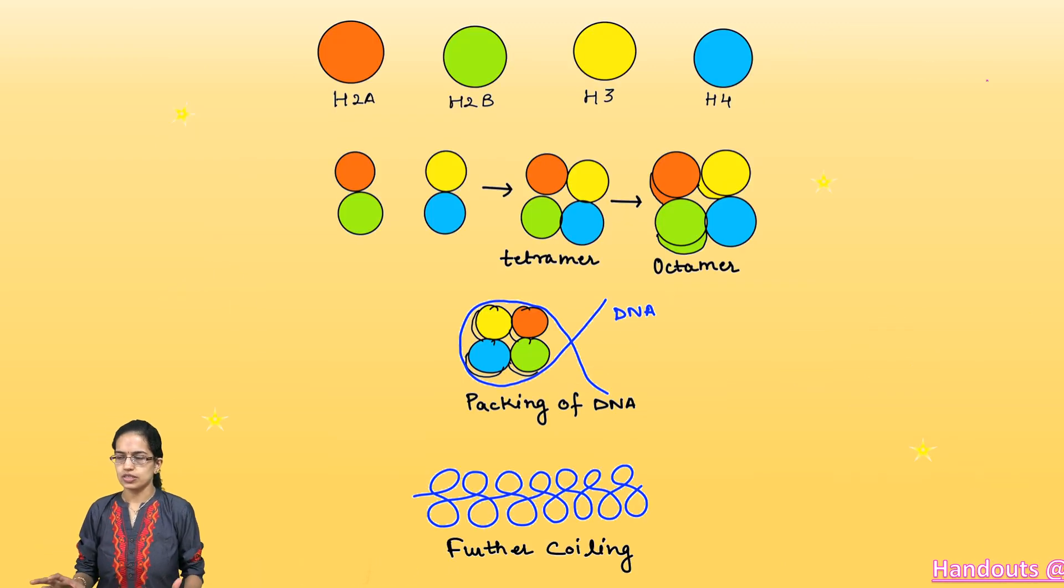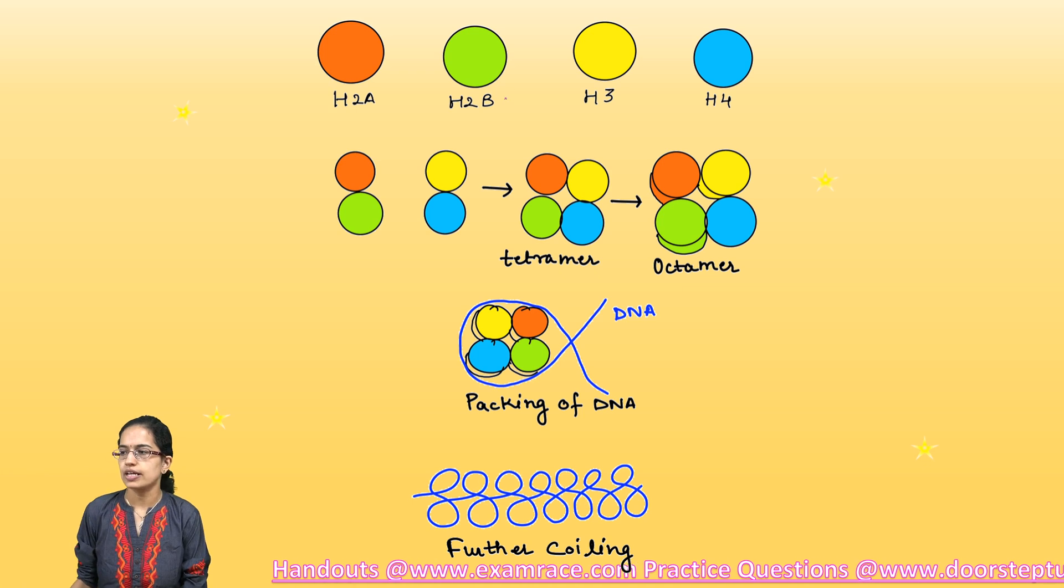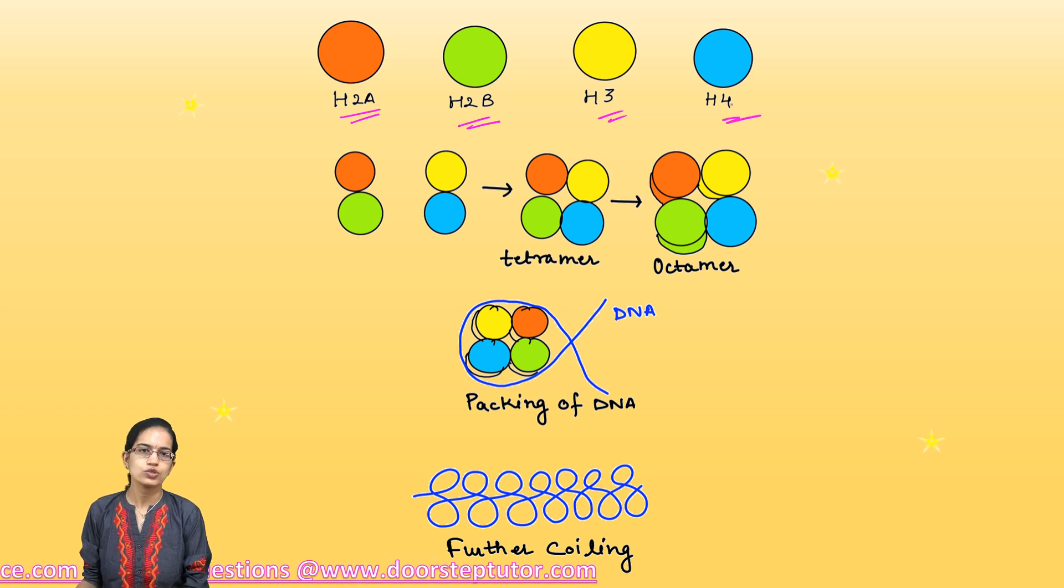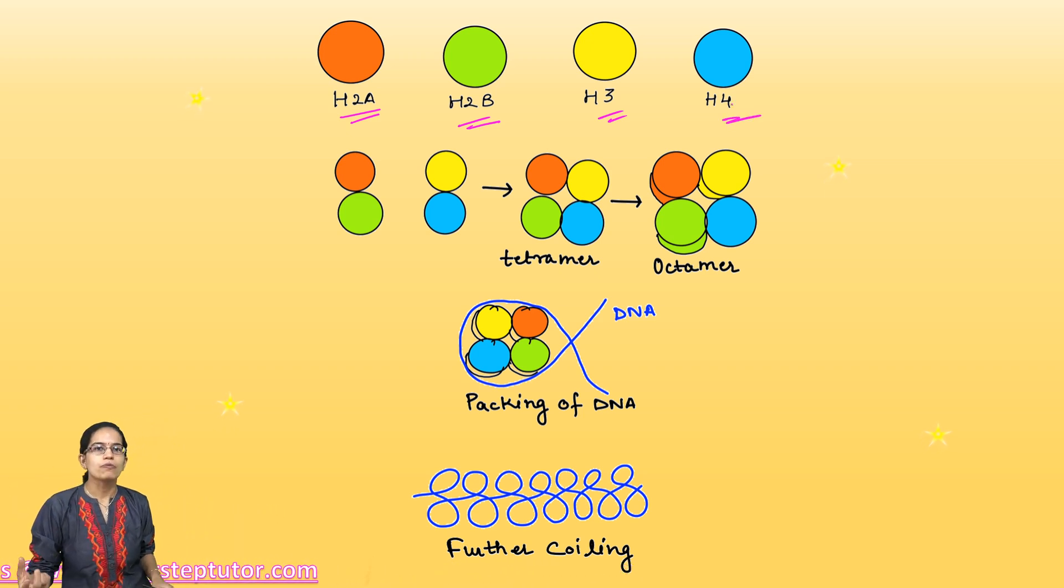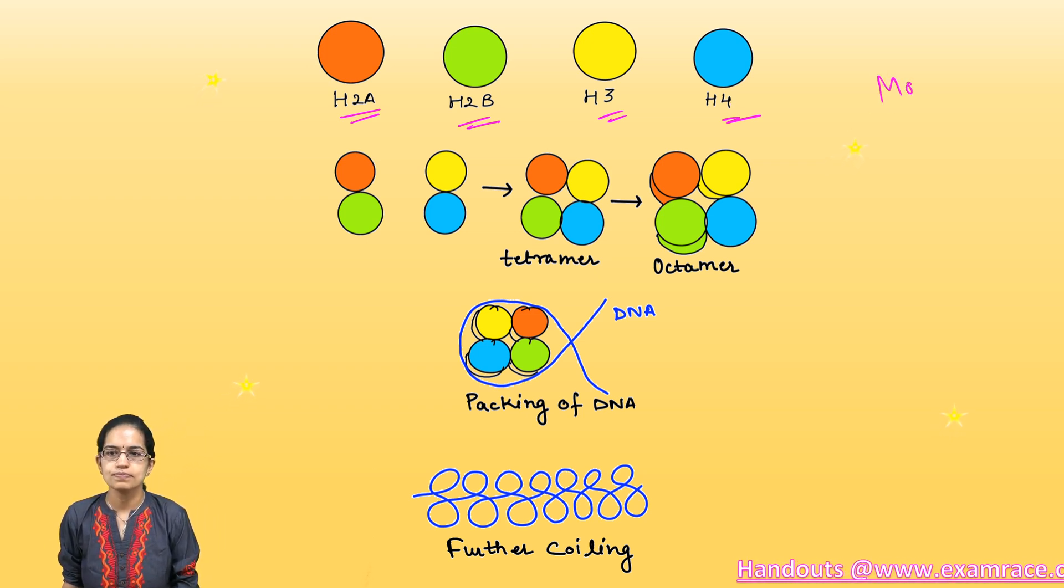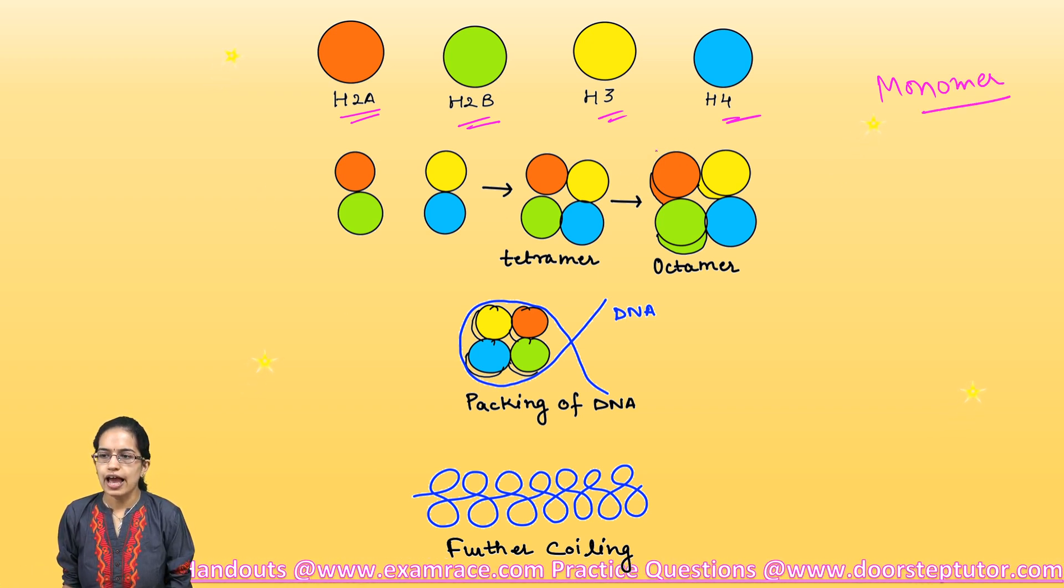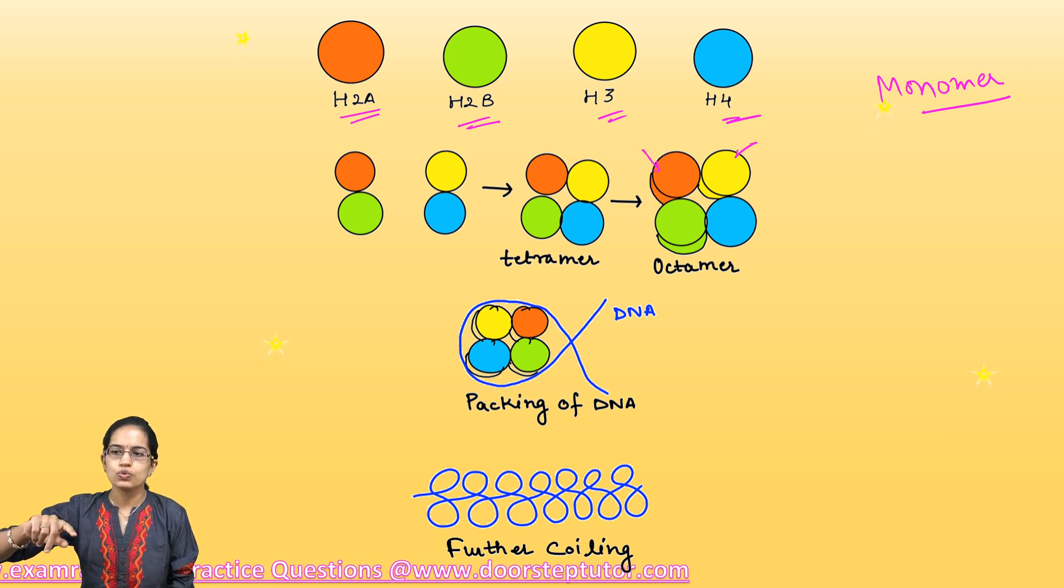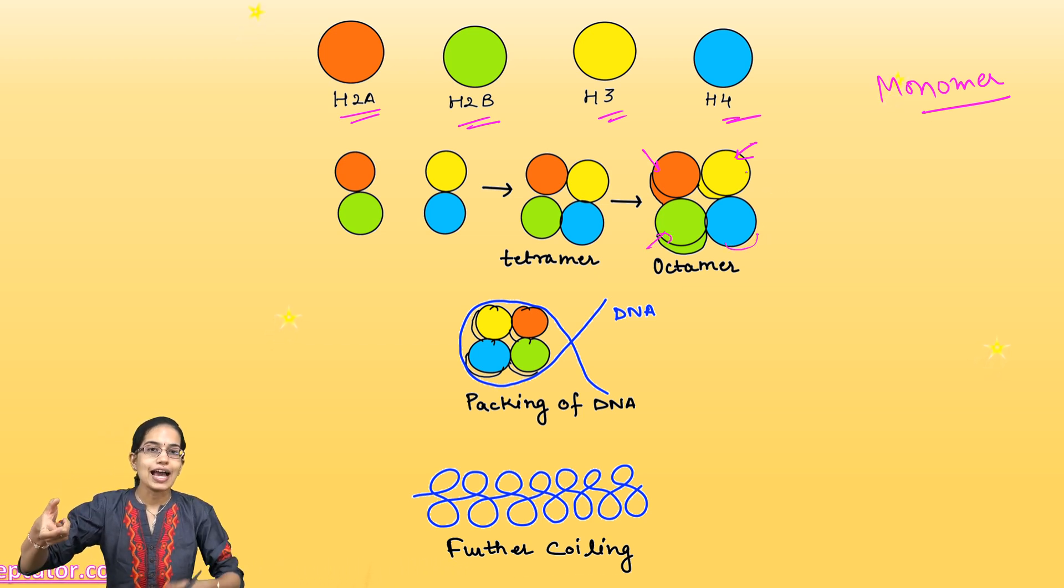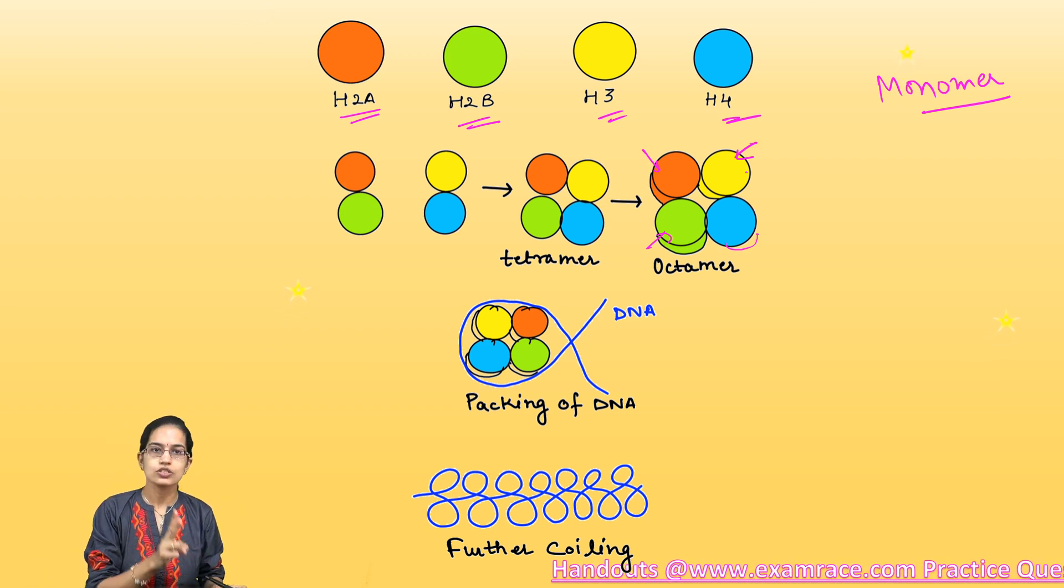Let's understand how it actually works. We have the four core histones that we have talked about. I'll leave aside the linker histones for a while. The core histones are H2A, H2B, H3, and H4. We have depicted those with different colors. Each of these histones are individually called as monomers. In the first line as we can see, these are monomers. What happened is I have brought two of these: two orange, two blue, two green, and two yellow as you can see here.